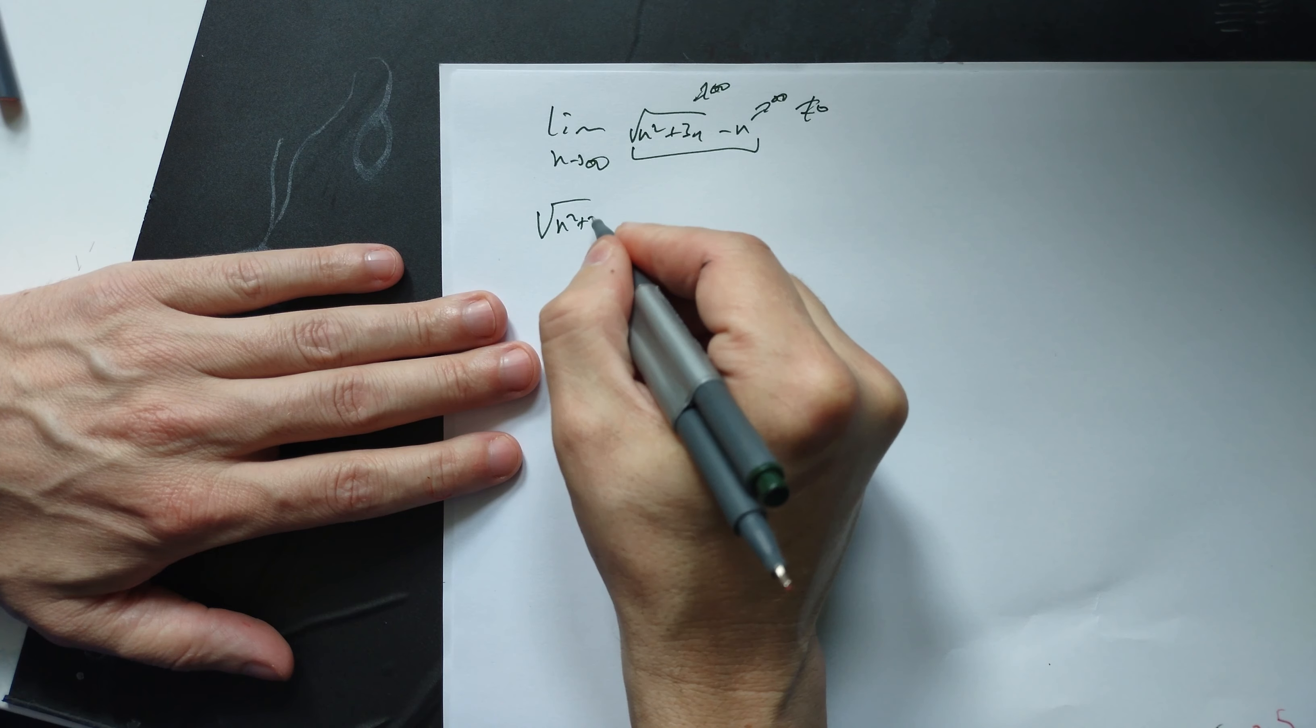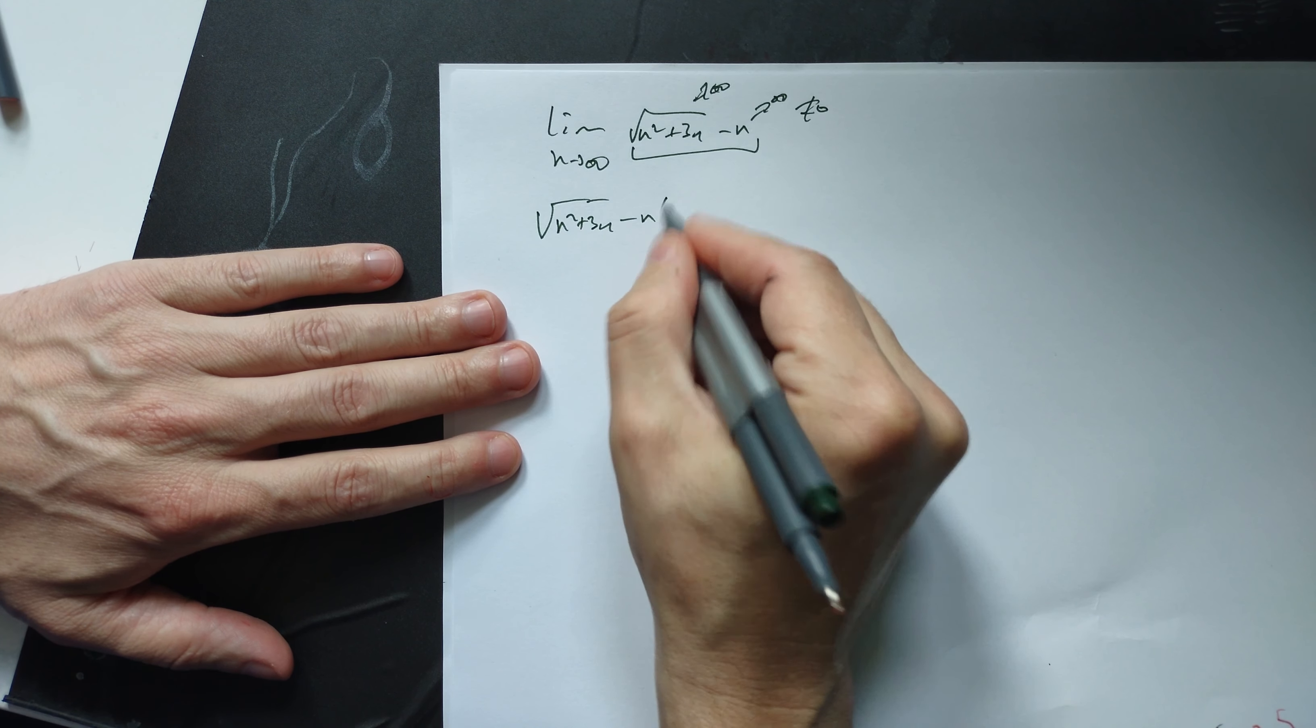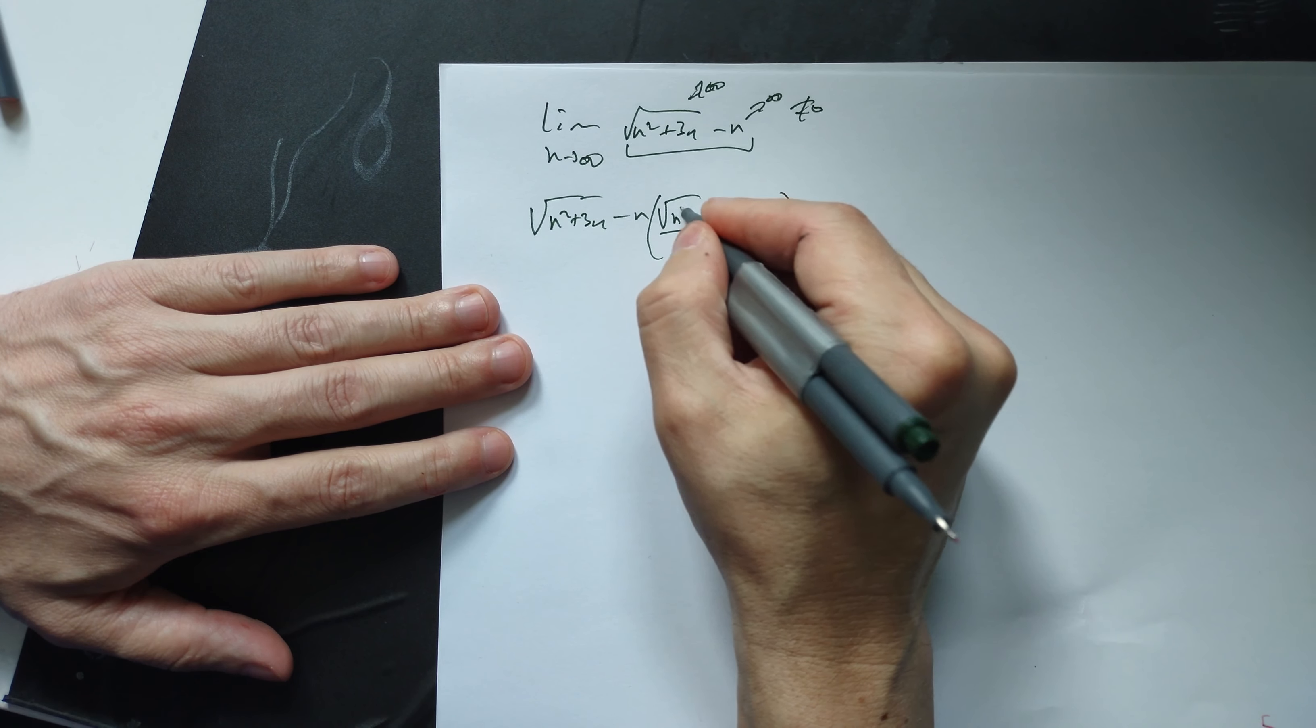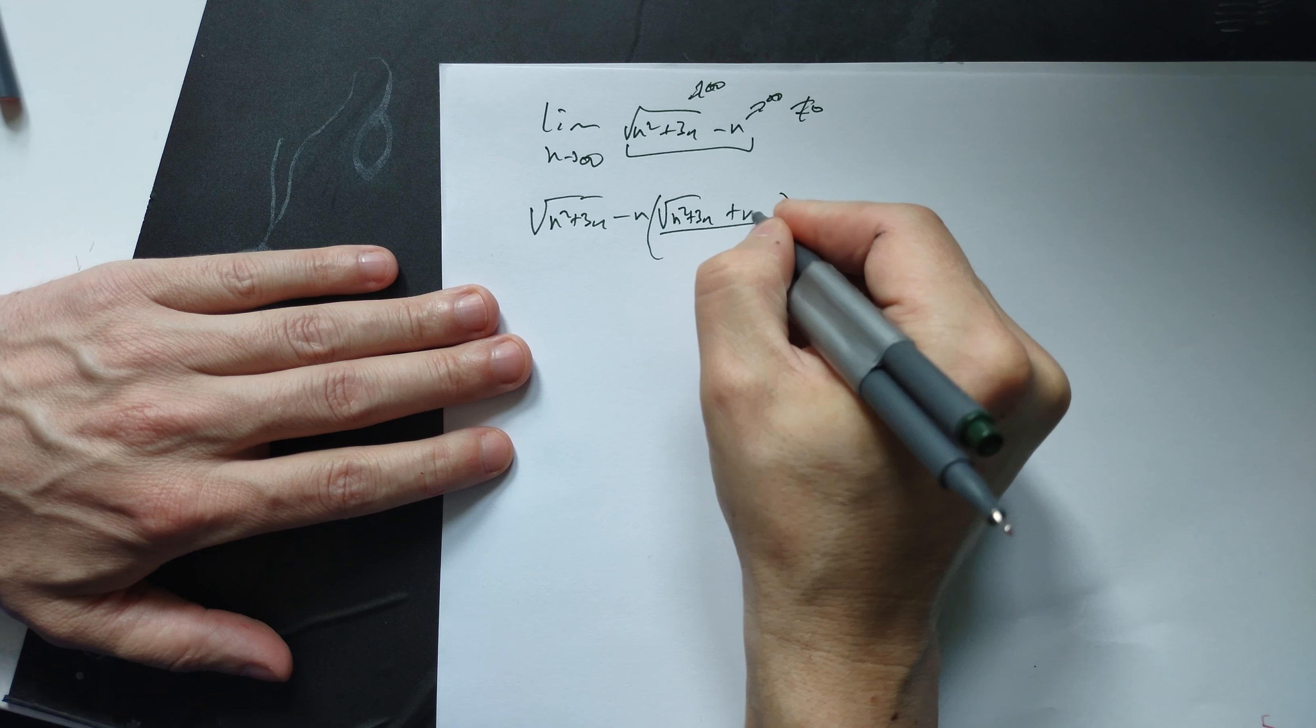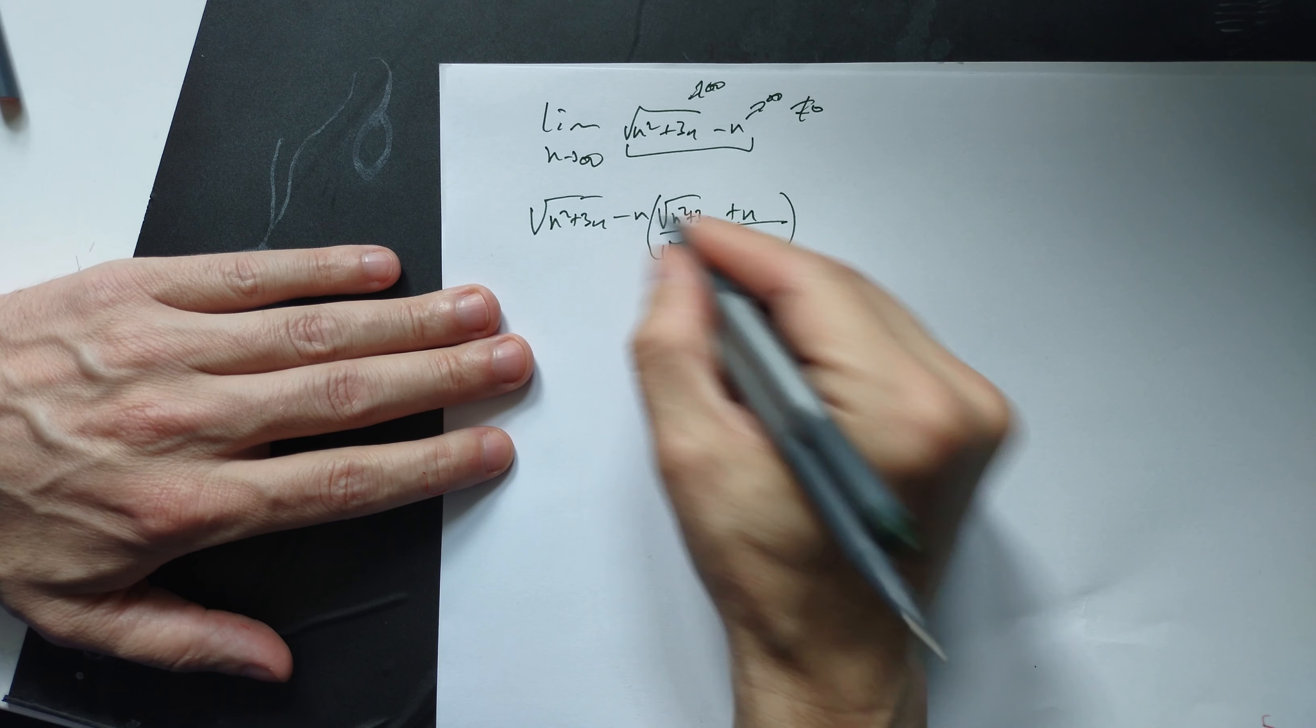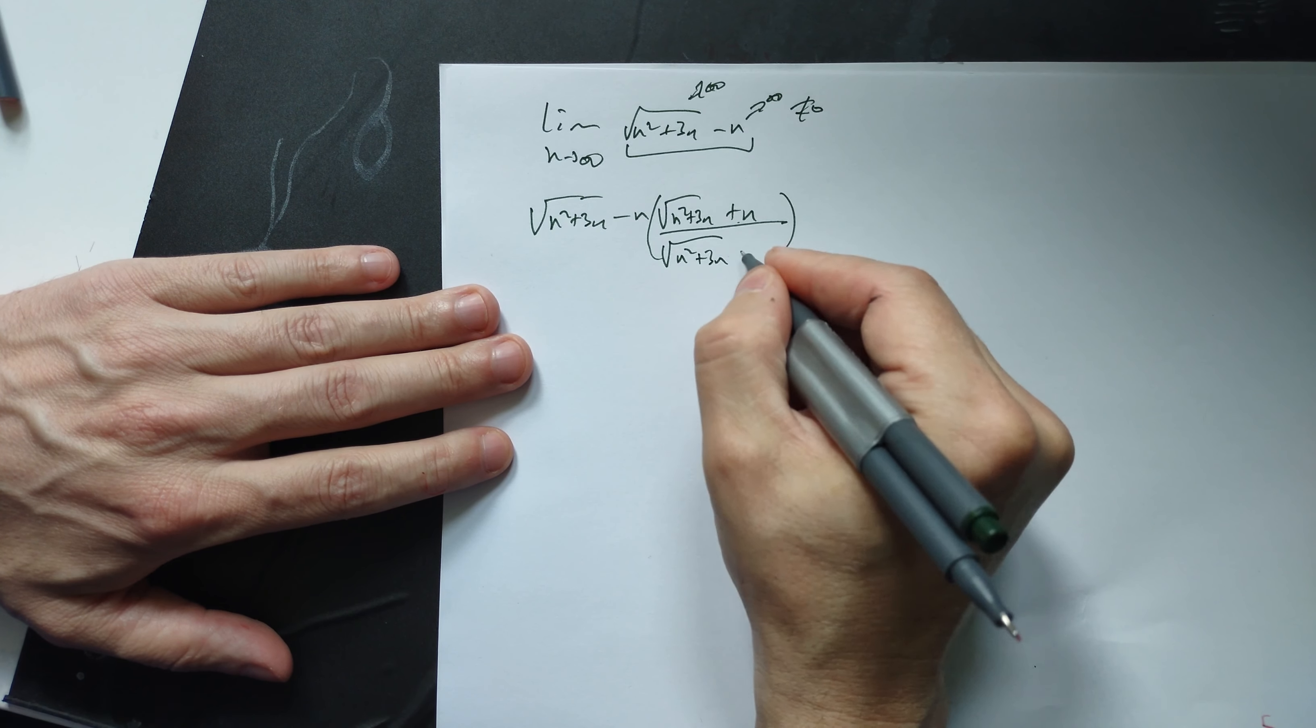So you have √(n² + 3n) - n. Multiply it by the conjugate: √(n² + 3n) + n over √(n² + 3n) + n. Notice the plus sign being different from the minus.